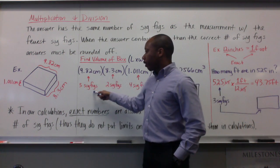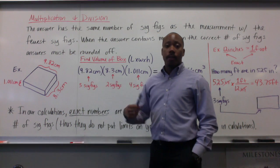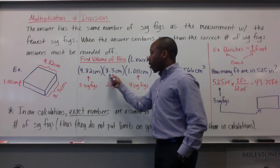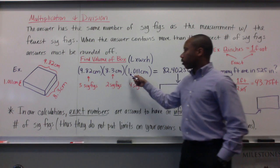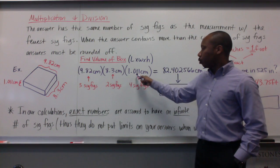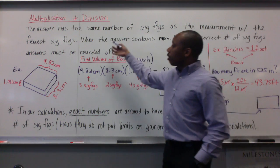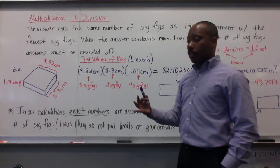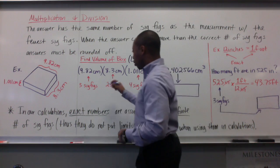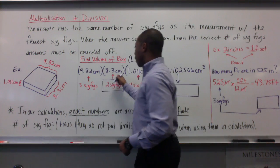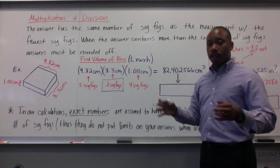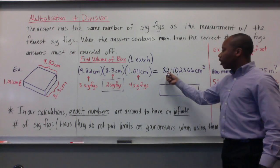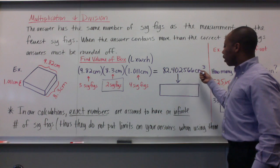My length has three significant figures. My width has two significant figures. My height has four significant figures. The rule says the answer has the same number of significant figures as the measurement with the fewest significant figures. The fewest significant figures are two, in the width. That means our final answer can contain no more than two significant figures. Once we do this mathematics out and multiply all these quantities together, we get 82.402566 cubic centimeters.